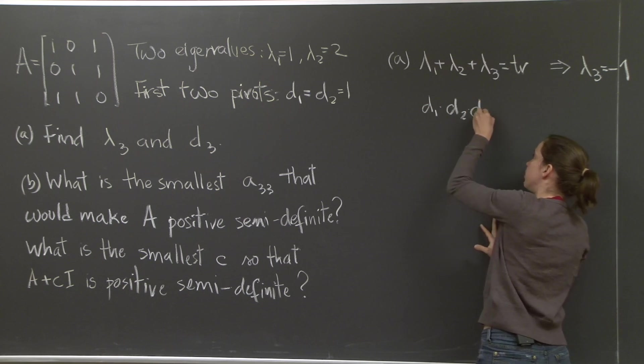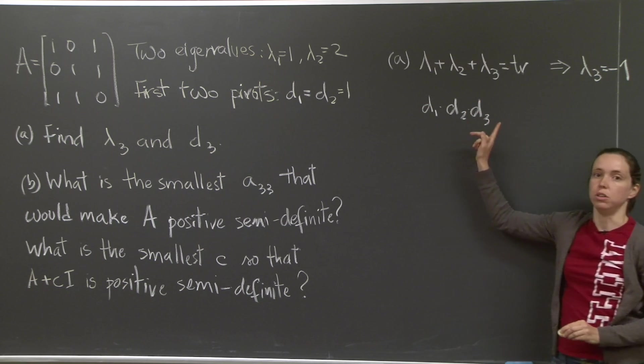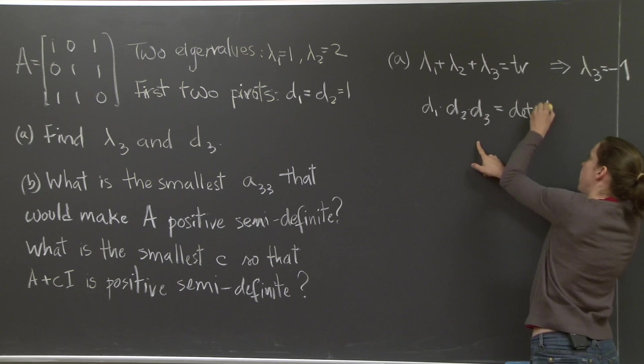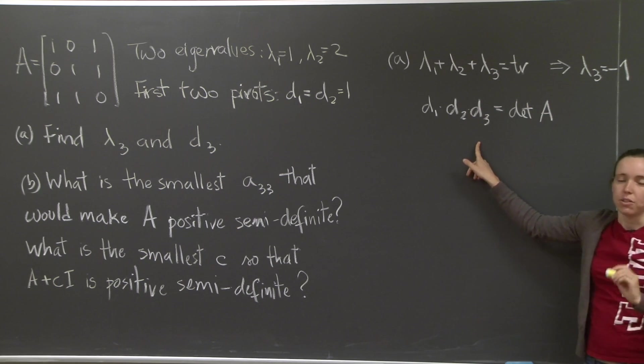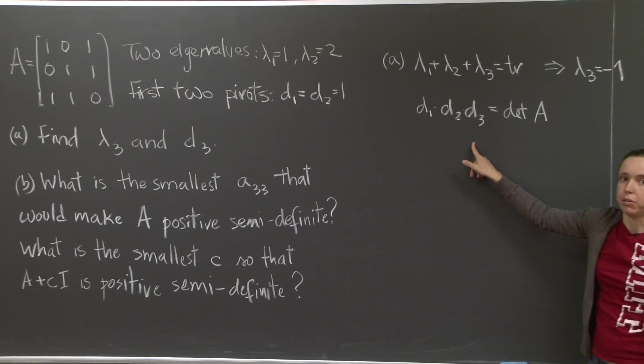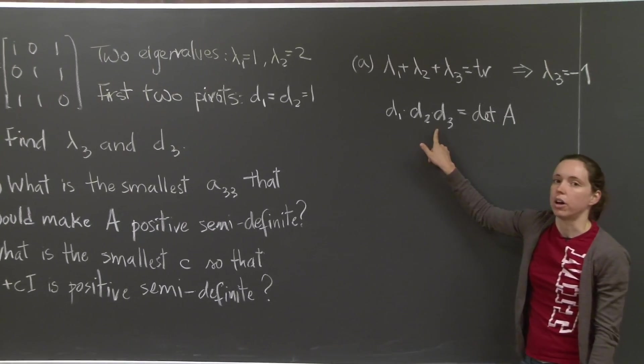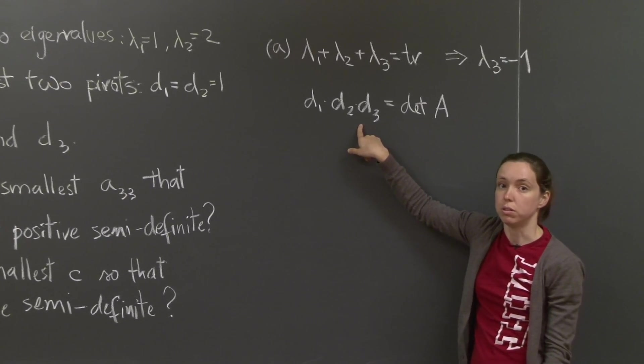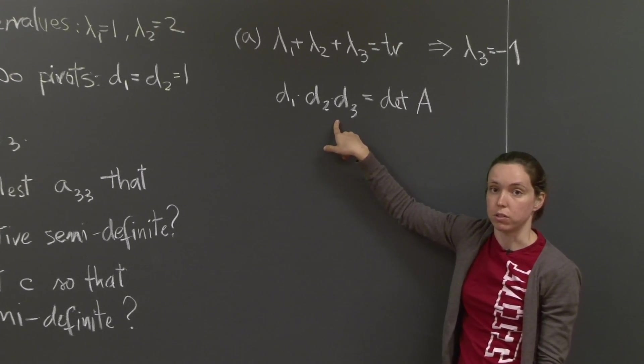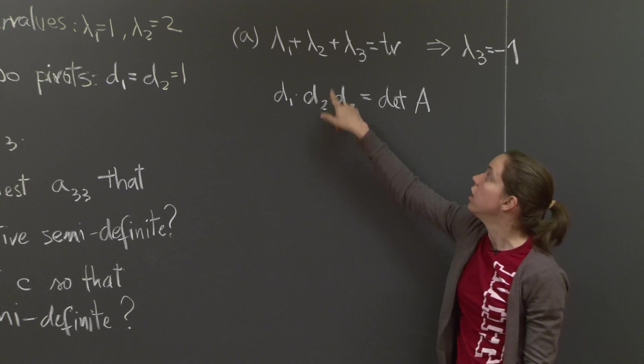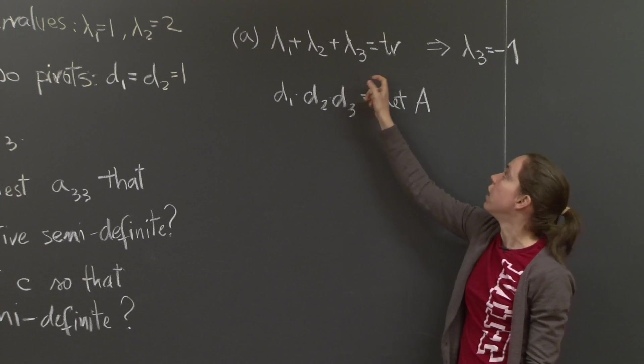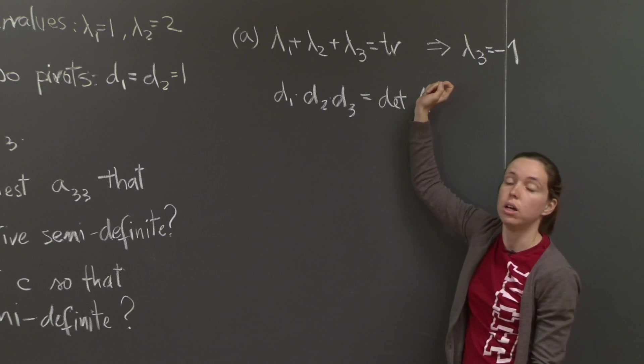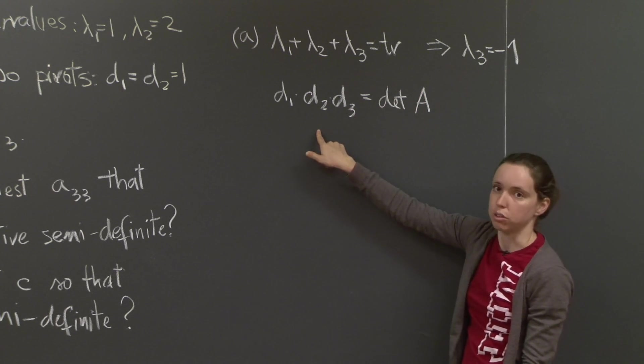So the determinant of that matrix will be d1 times d2 times d3 and will still be equal to the determinant of A. I guess there's a small caveat that I should point out. The pivots are not always the diagonal entries. It might be that one of the diagonal entries will be 0. That happens if the matrix is singular. But here, all my three eigenvalues are non-zero. They are 1, 2, and minus 1, so that won't happen. So this is actually possible to do.